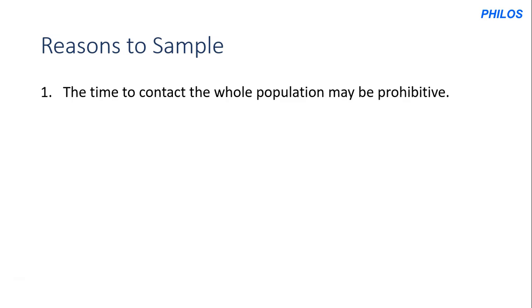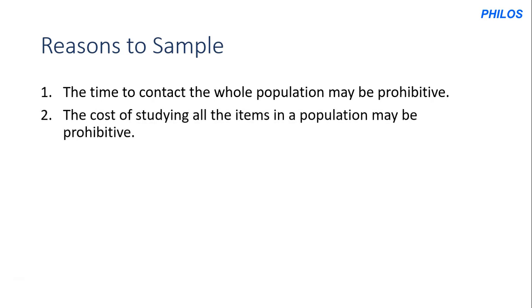Let's look at some of the reasons for sampling. The first reason is that the time to contact the whole population may be prohibitive. For example, if you are vying for SRC president and want to know your chances of winning, you send team members to interview students. Questioning all students on campus would take more time than getting a sample of 500 or 600 — say 100 from each of six colleges. Another reason is that the cost of studying all items in the population may be prohibitive.